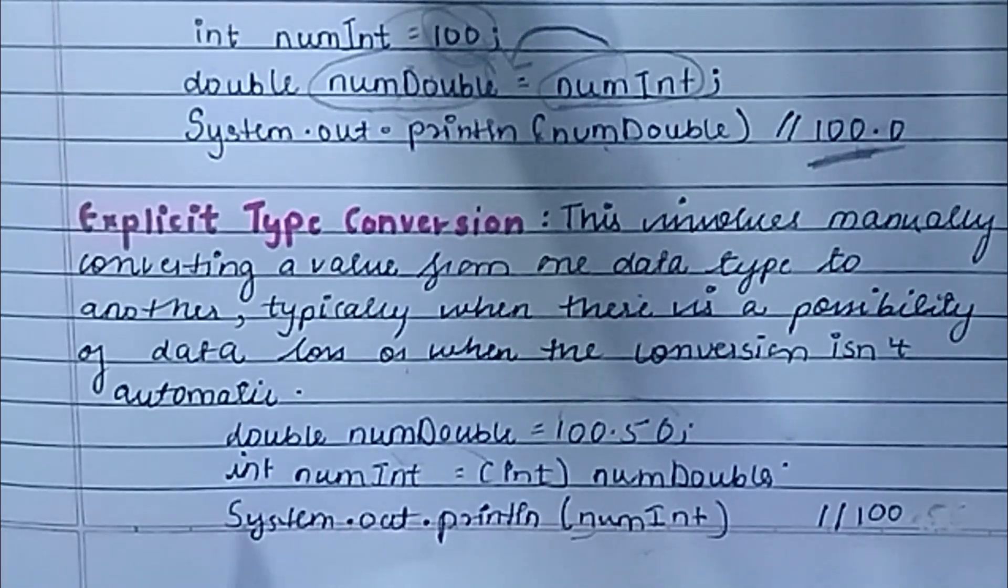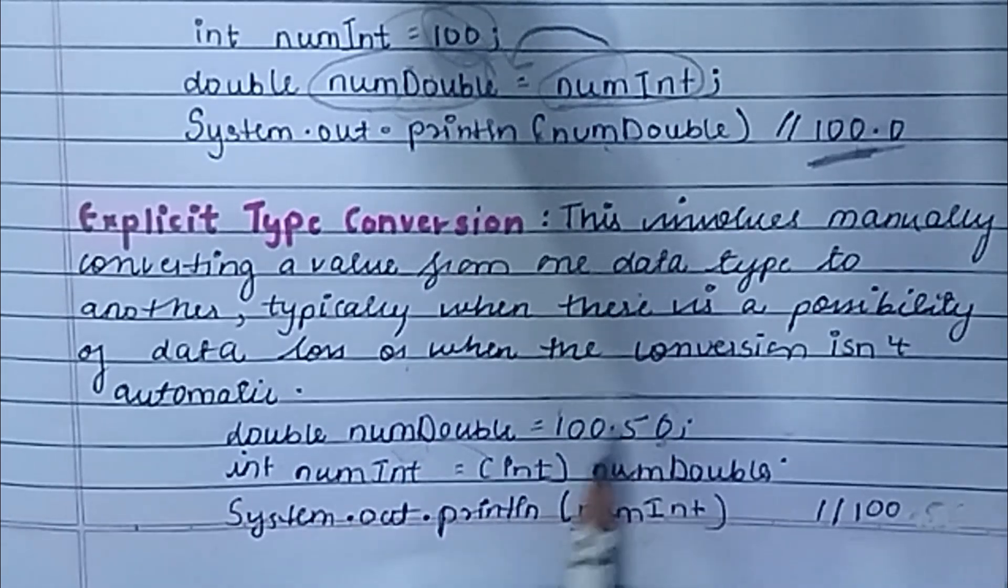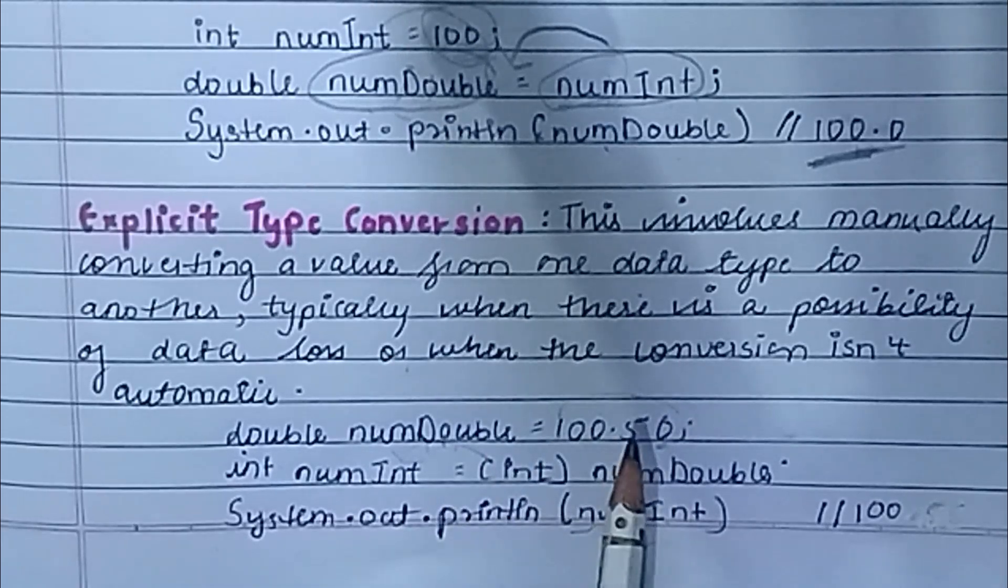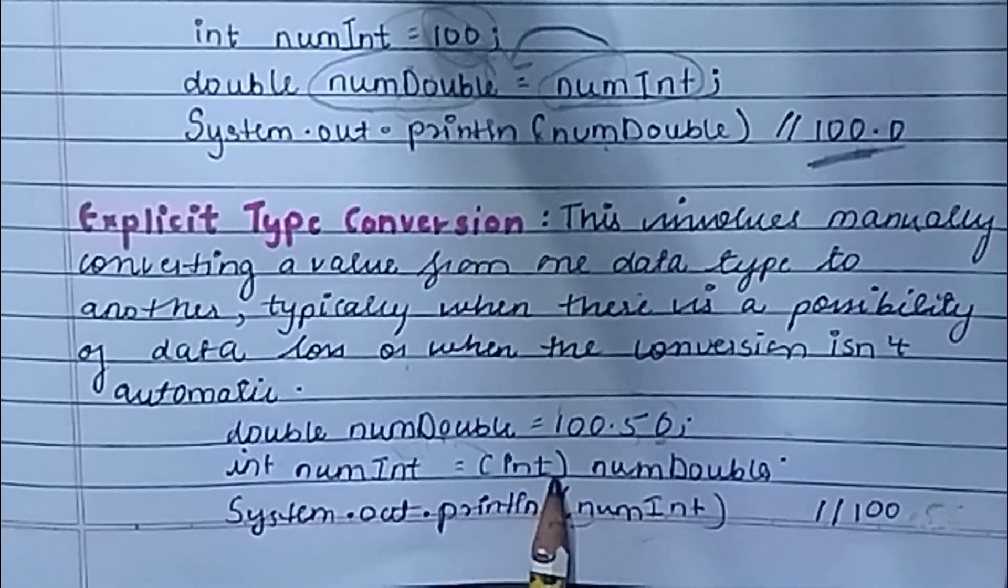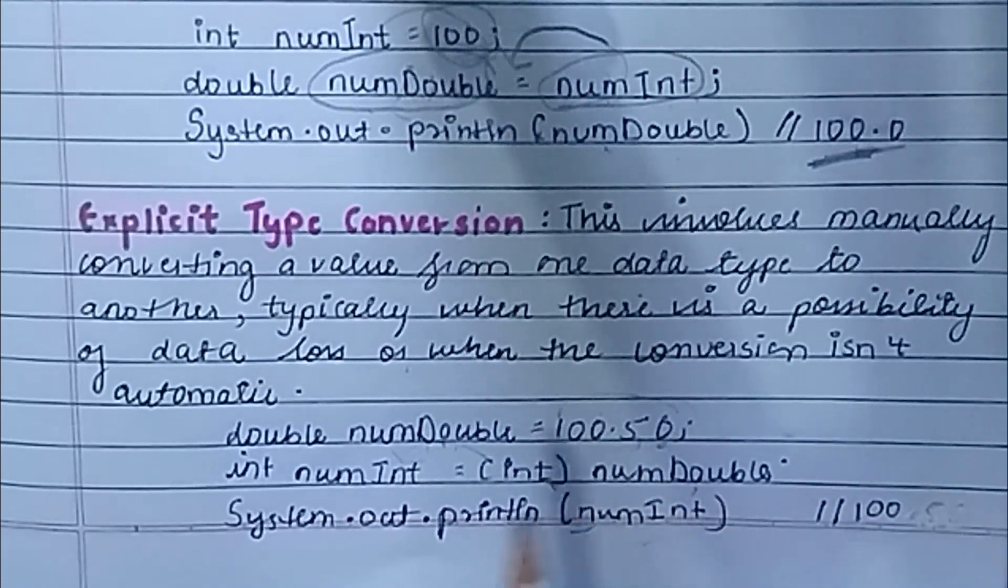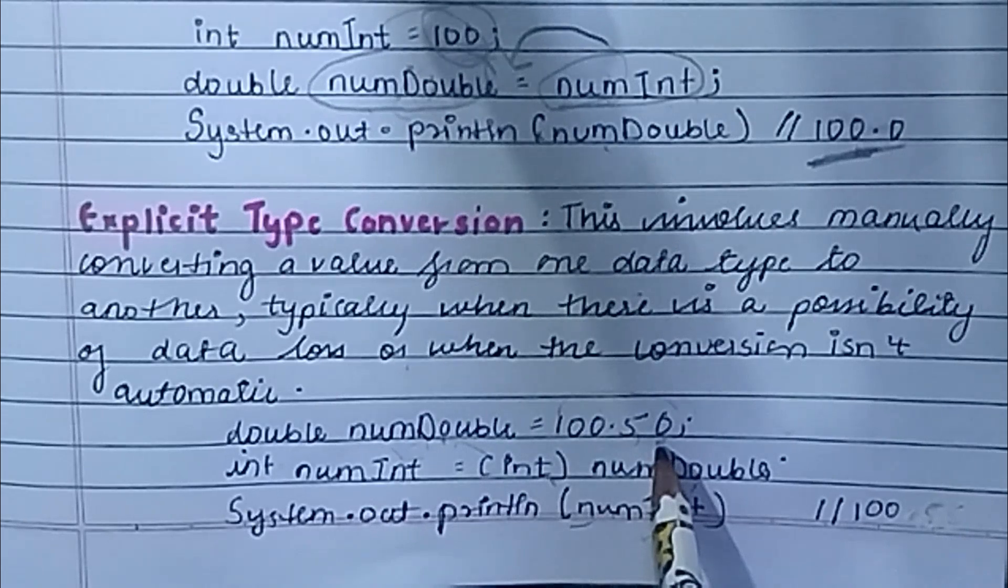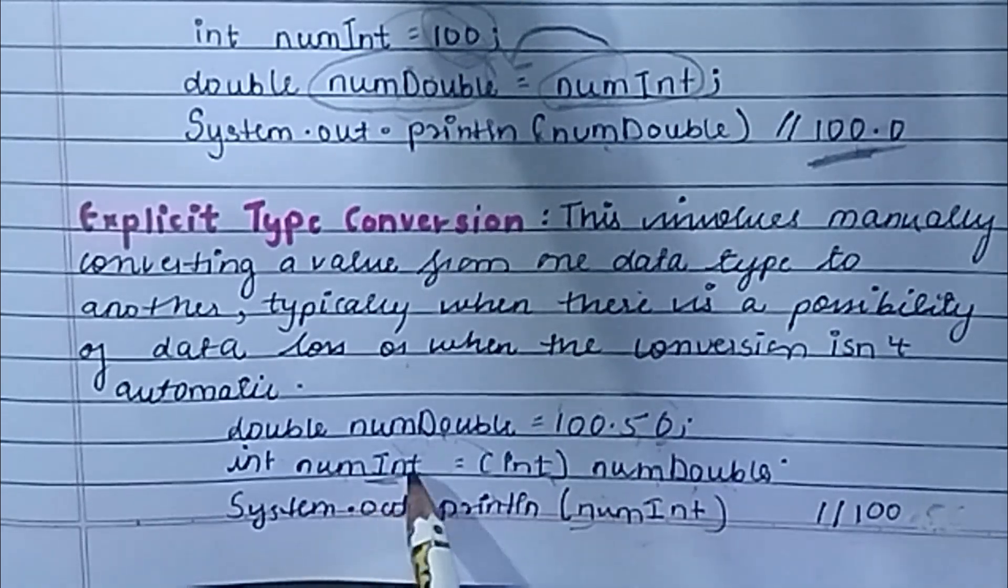For example, double numDouble equals 100.50. So this is our numDouble value in which we have saved 100.50. Int numInt equals (int) numDouble. So here we are doing type conversion. We converted the numDouble value into integer and saved the value in int.